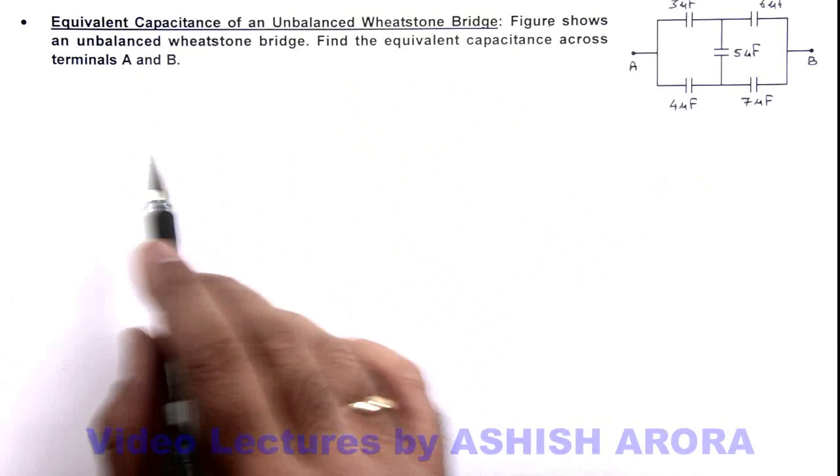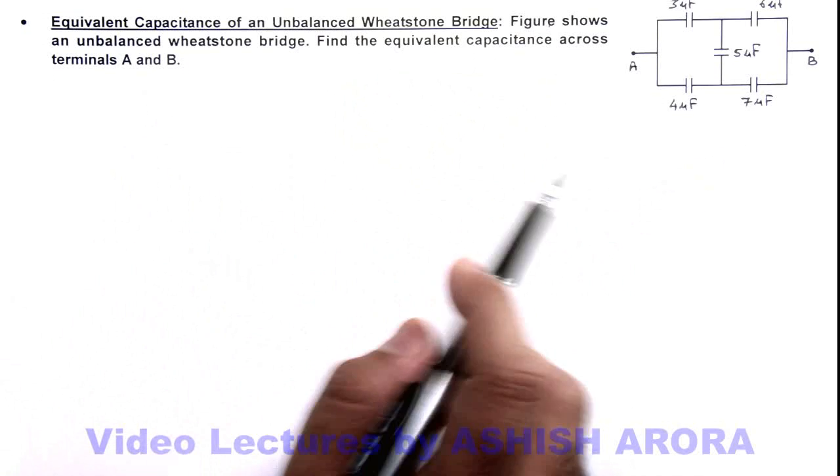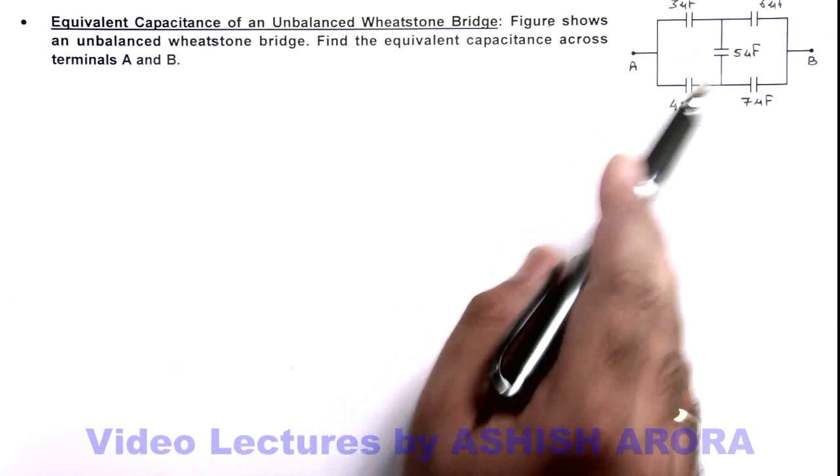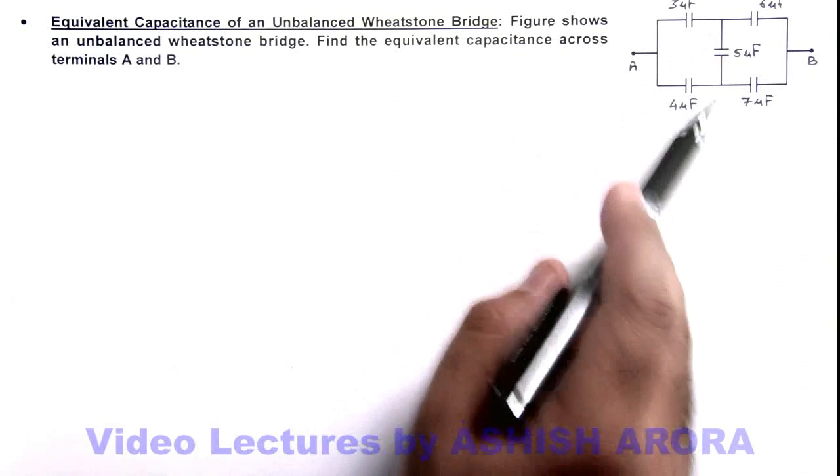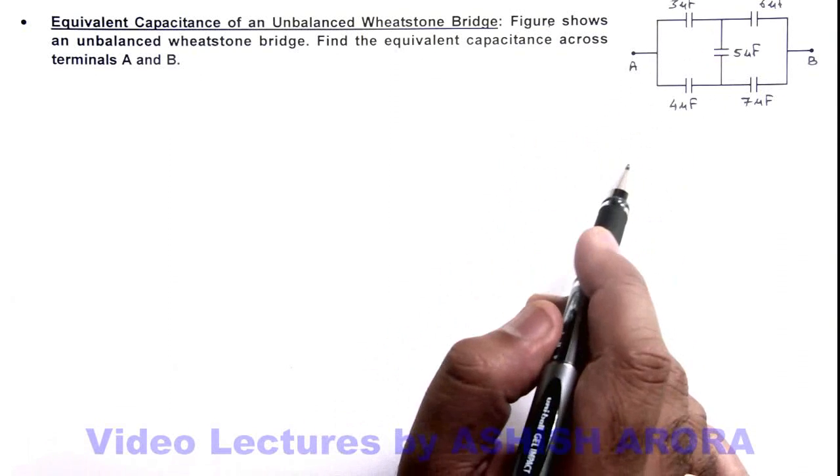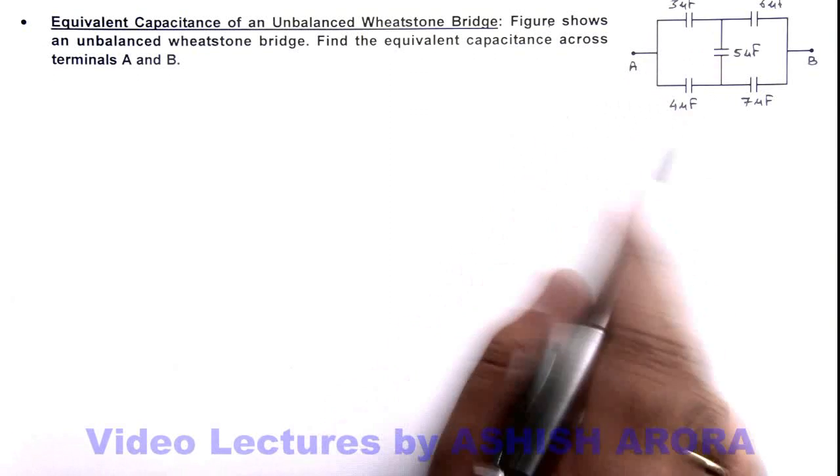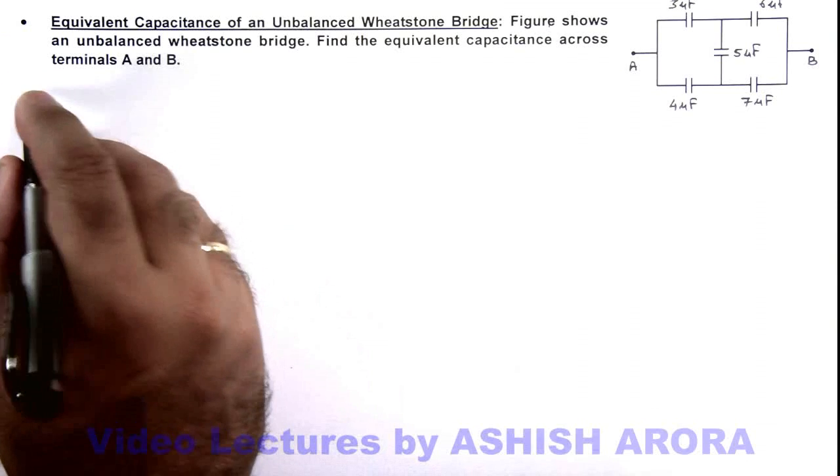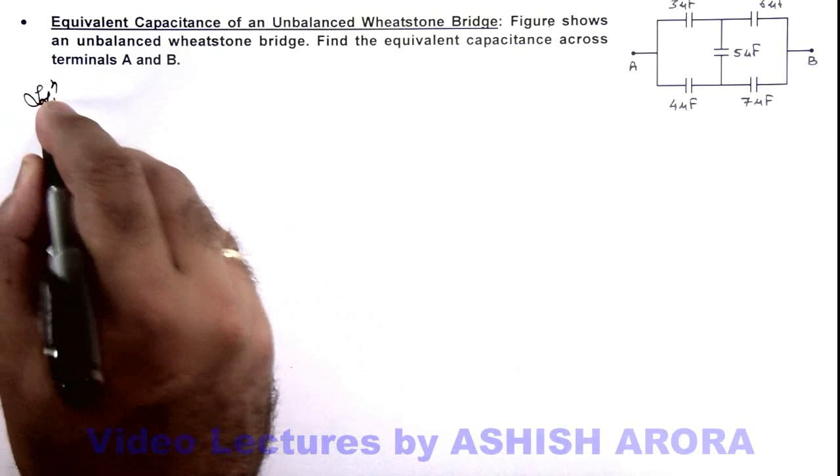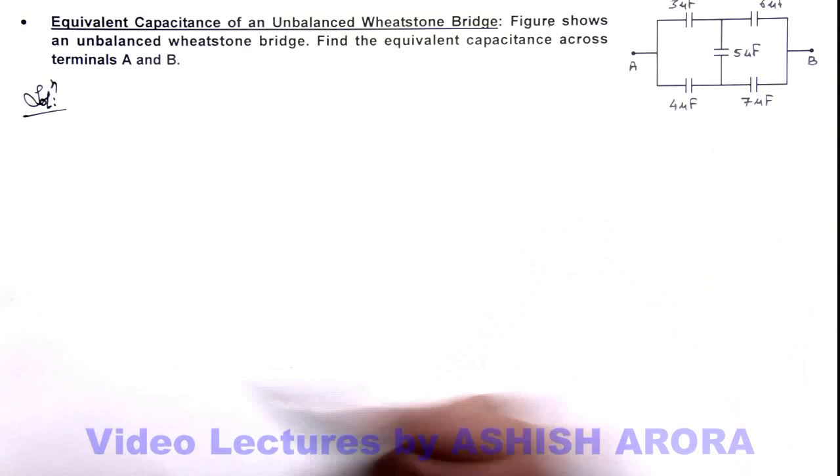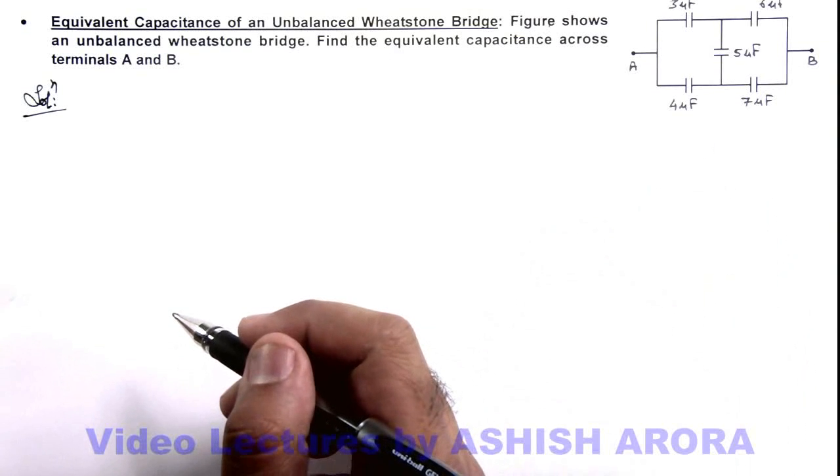We already studied in video concept that if the Wheatstone bridge is balanced then we can remove the middle capacitor because the potential on the two sides of capacitor remains same, and we can directly solve the equivalent capacitance by taking capacitors in series and parallel. But here we need to use the nodal analysis and by distribution of potentials we need to calculate the equivalent capacitance.